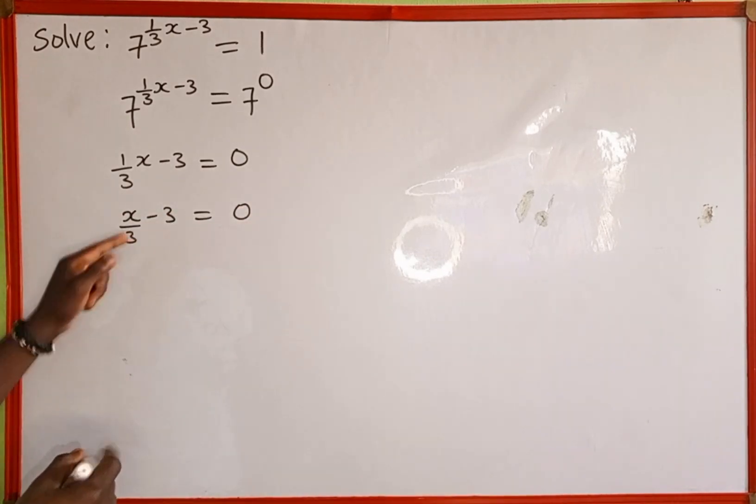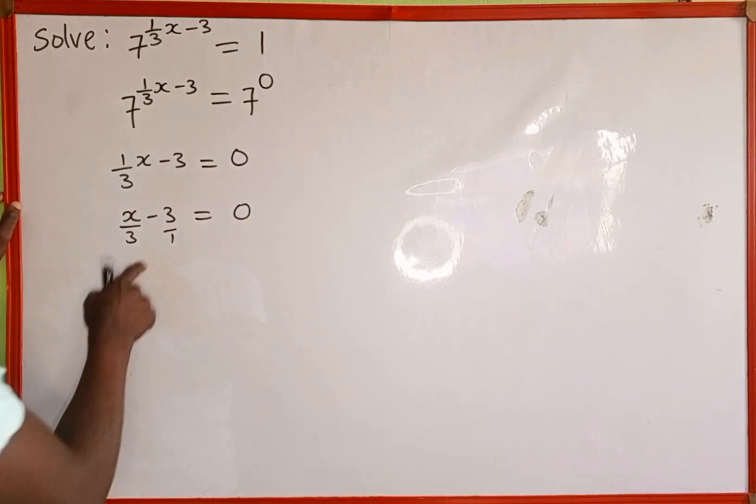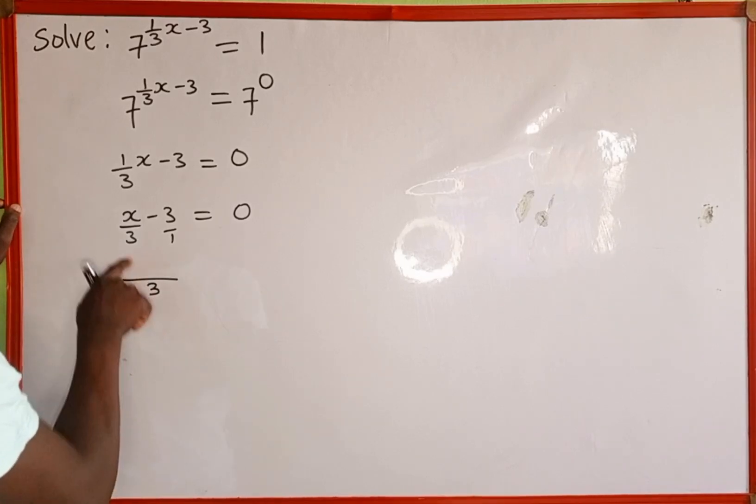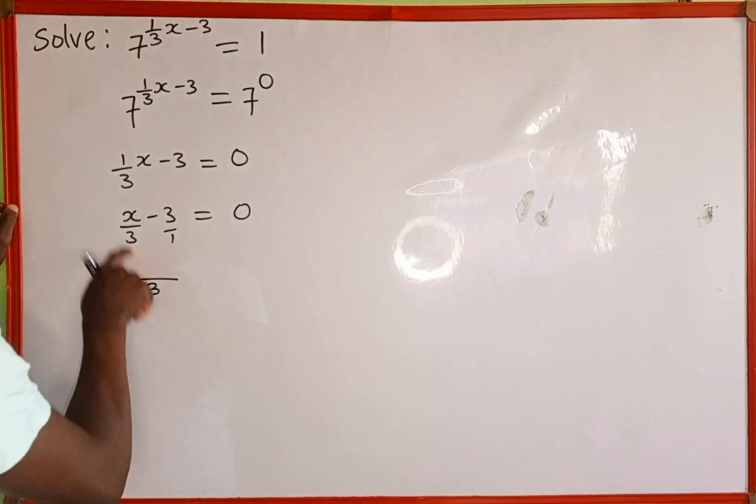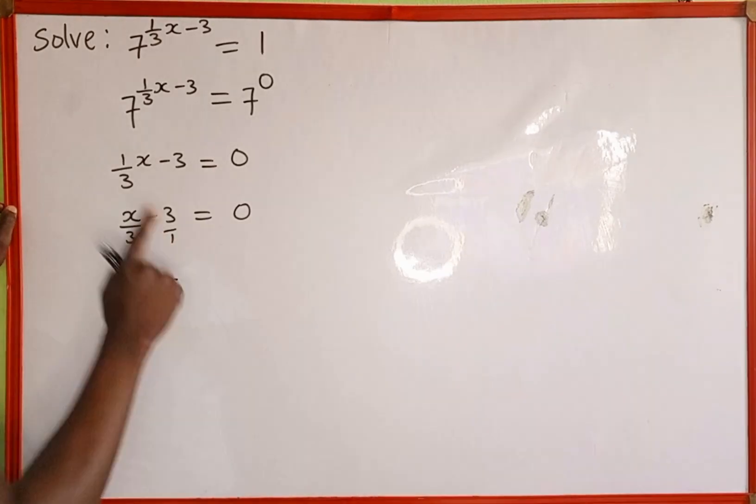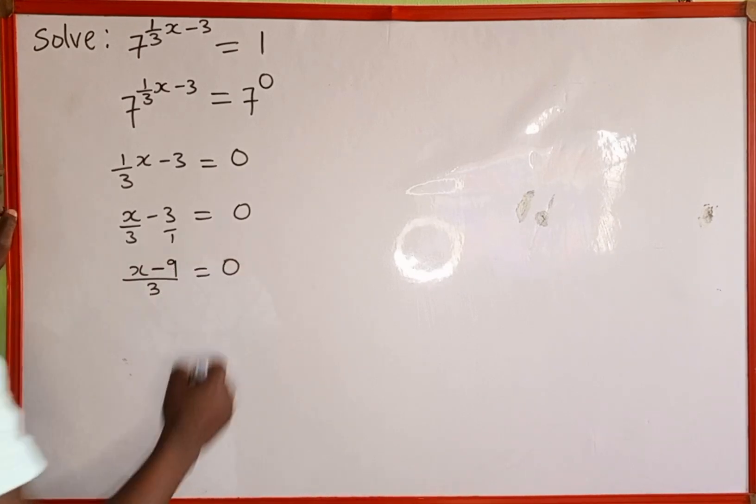Now we're still going to simplify the left hand side. This 3 is the same as 3 over 1, so the LCM here is 3, then we rule a division line. 3 divided by 3 is 1, then 1 multiplied by x gives us x. Then 3 divided by 1 is 3, then 3 multiplied by 3 gives us 9, which is equal to 0.